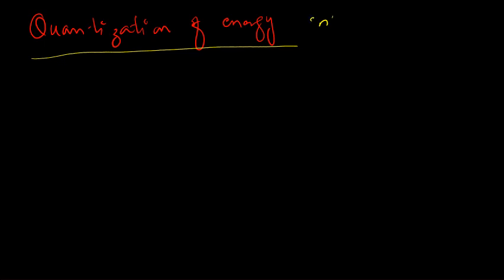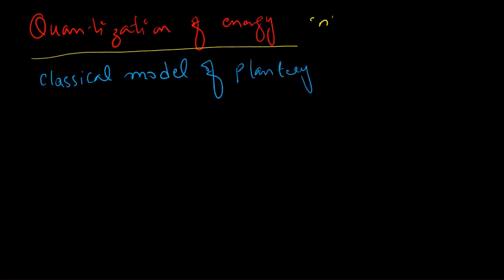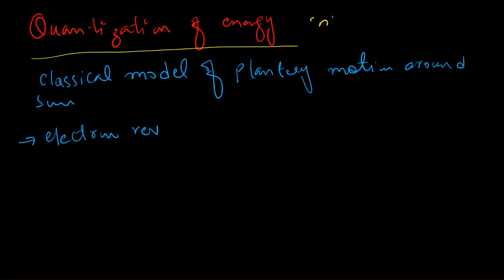The principal quantum number is represented by n. First, I will tell you about the classical model of planetary motion around the Sun, and in the same way we have electrons revolving around the nucleus.